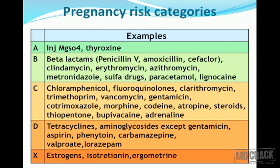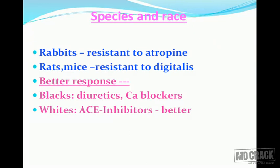Comparatively safer drugs can be prescribed to pregnant women. Category A includes magnesium sulfate injection and thyroxine. Category B includes important drugs like beta-lactam antibiotics — penicillin, amoxicillin, and cephalosporins. Category C includes chloramphenicol, which can produce gray baby syndrome and fetal abnormalities. Category D includes aminoglycosides (except gentamicin), tetracycline, carbamazepine, phenytoin, and valproate — all producing fetal hydantoin syndrome.